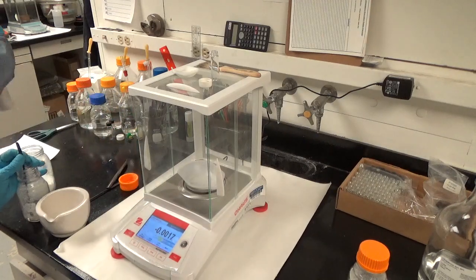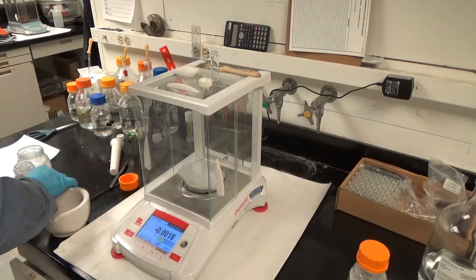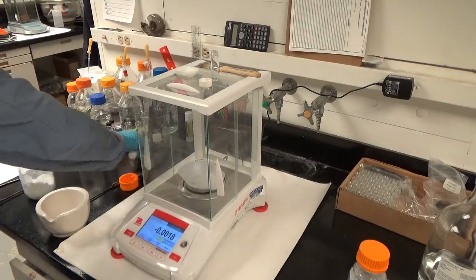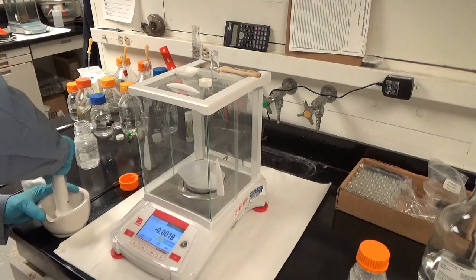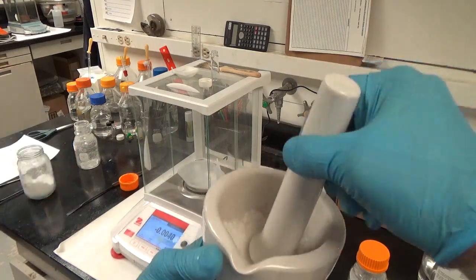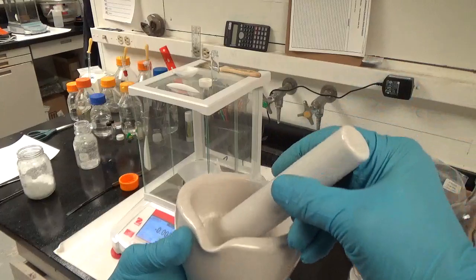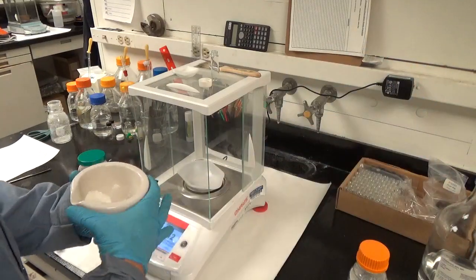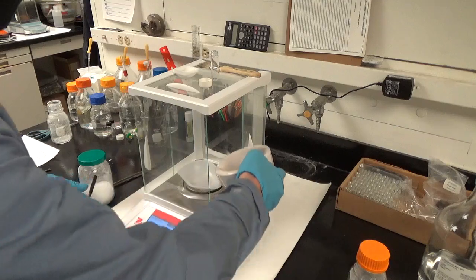Trioctyl phosphine oxide (TOPO) we actually distill ourselves, so after we distill it we pour it as a melt into these flasks. It's kind of difficult to work with - you have to break it up. It's a nice solid mass, so we have to break it up, powderize it. I believe there's about four grams.